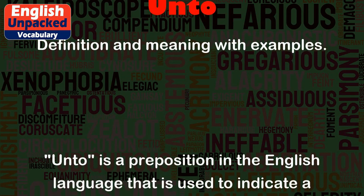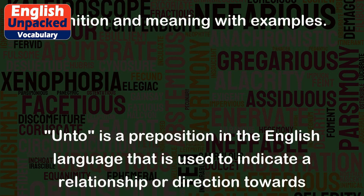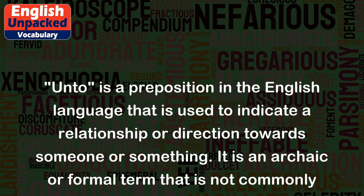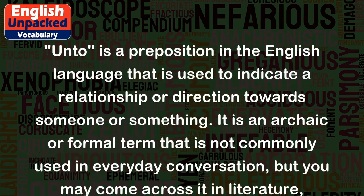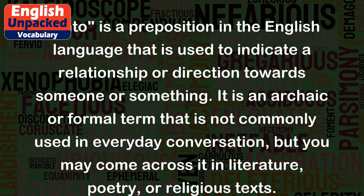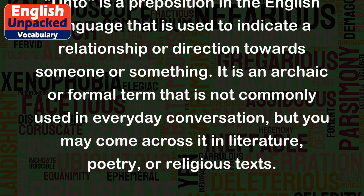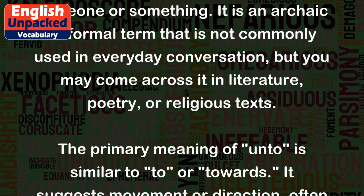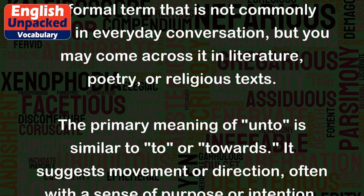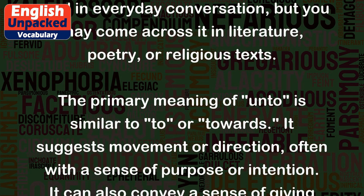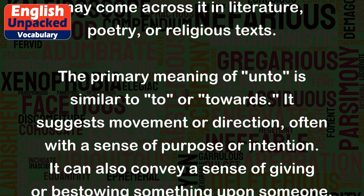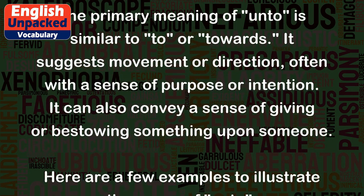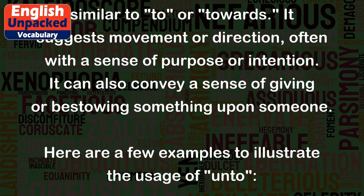Unto is a preposition in the English language that is used to indicate a relationship or direction towards someone or something. It is an archaic or formal term that is not commonly used in everyday conversation, but you may come across it in literature, poetry, or religious texts. The primary meaning of unto is similar to 'to' or 'towards.' It suggests movement or direction, often with a sense of purpose or intention.